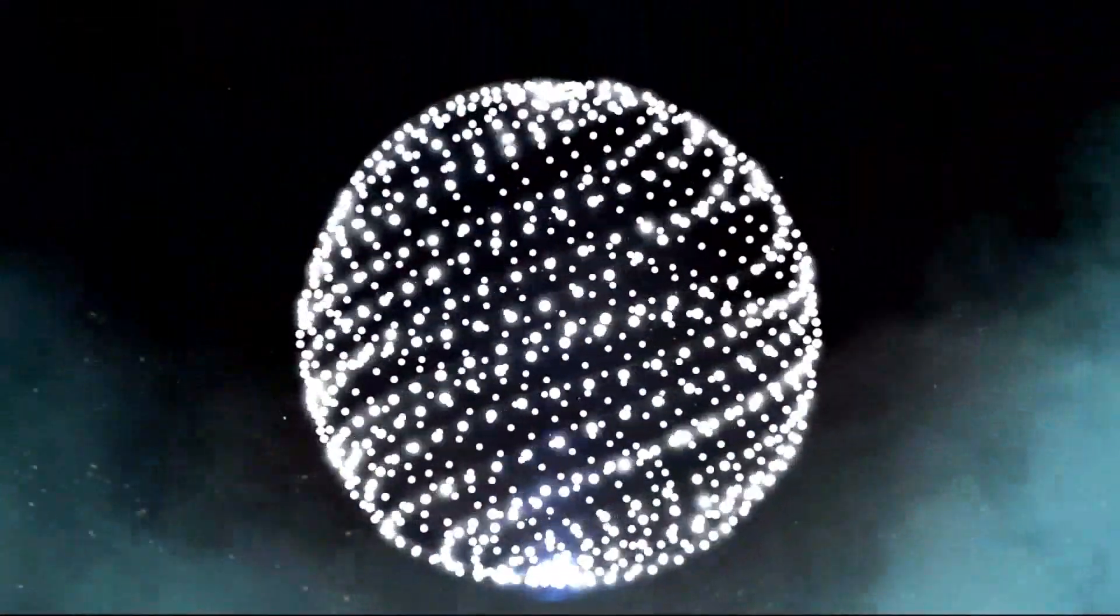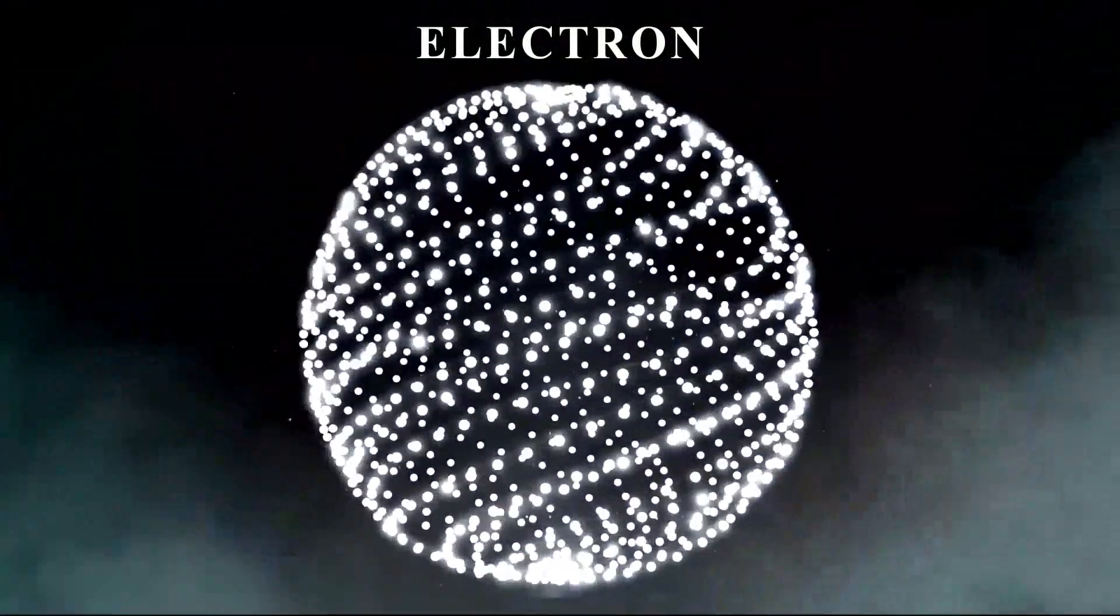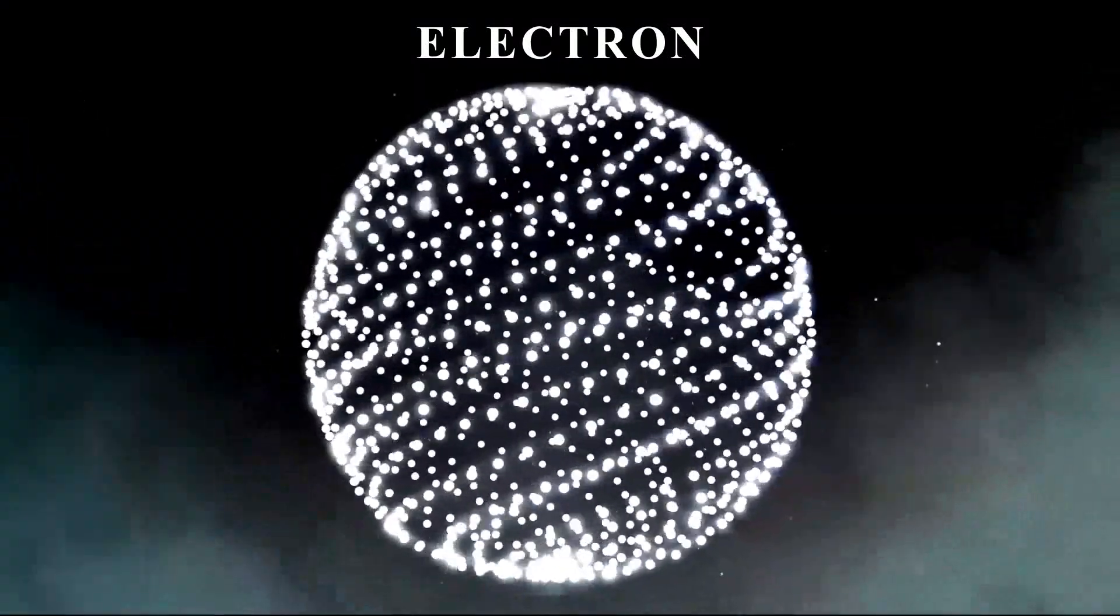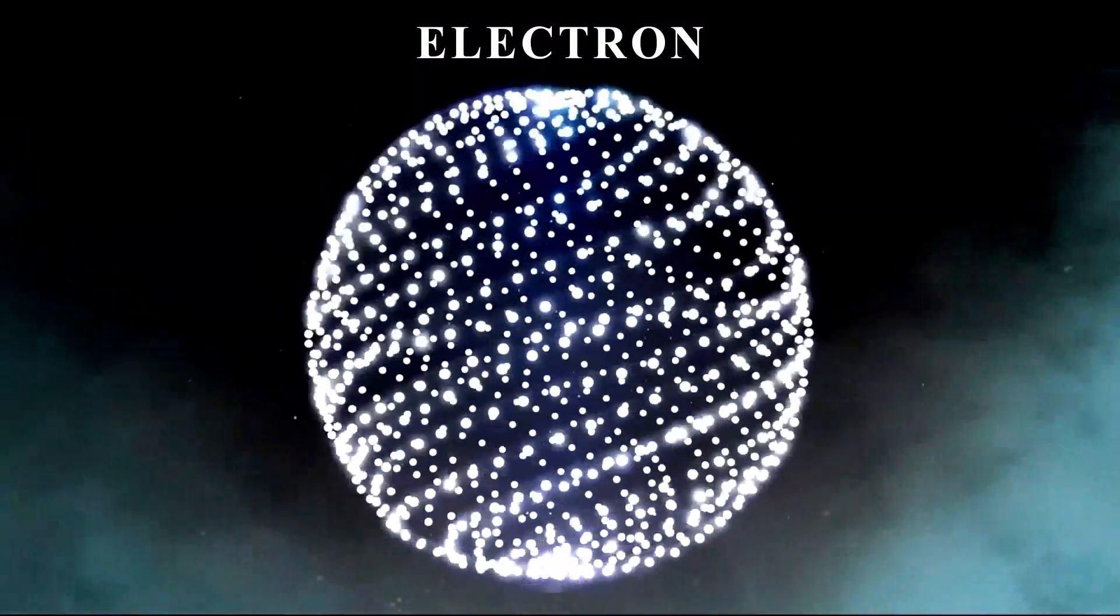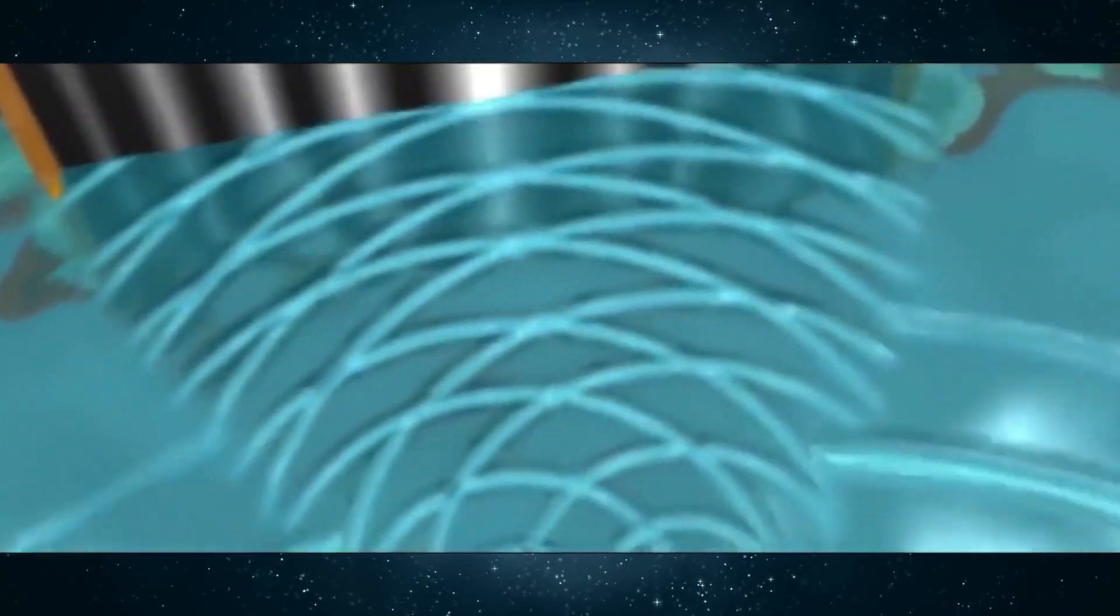But the question is, why does an electron whose rest mass has been proven to be constant also has an interference pattern in Young's double slit experiment? Therefore, it seems that existence of interference patterns is related to the motion of a particle, not the nature of it.